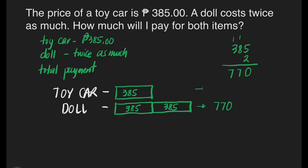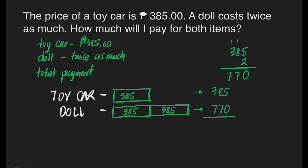The price of the toy car is 385 pesos. All we need to do is add the prices of these two items. 5 plus 0 is 5. 8 plus 7 is equal to 15 — write 5, carry 1 at the top of 3. 3 plus 7 is equal to 10, plus 1 is 11. So we will be paying 1,155 pesos for both the doll and toy car.